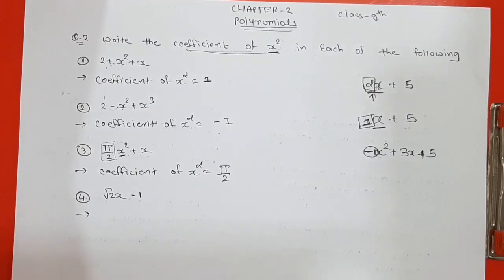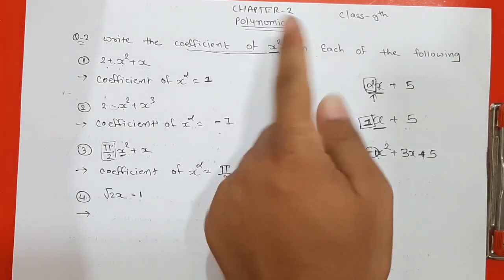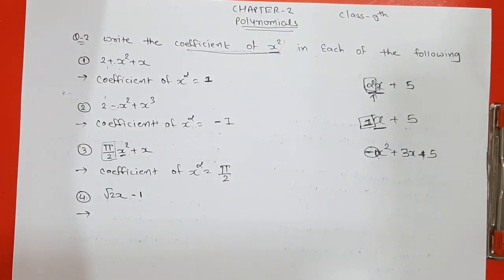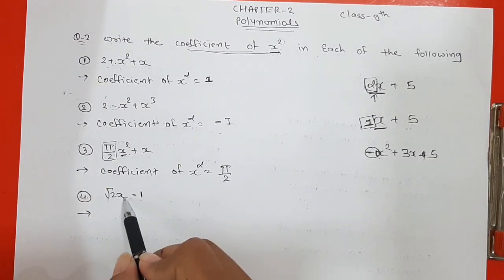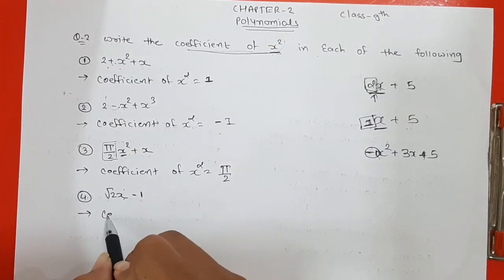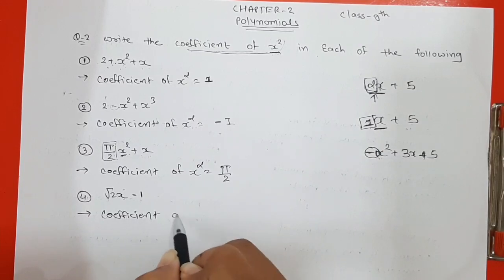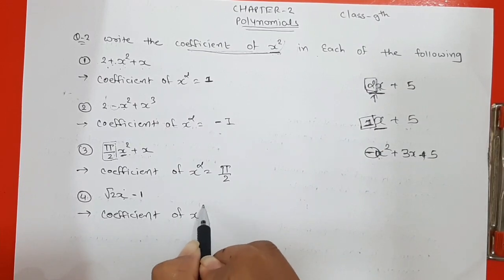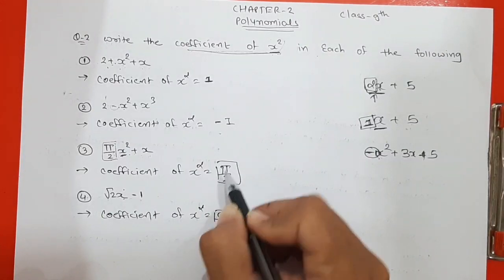The fourth expression is root 2 times x minus 1. In this expression there is no x squared term, so the coefficient of x squared is 0.